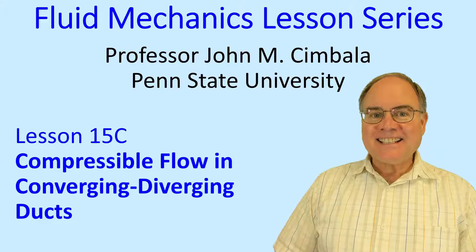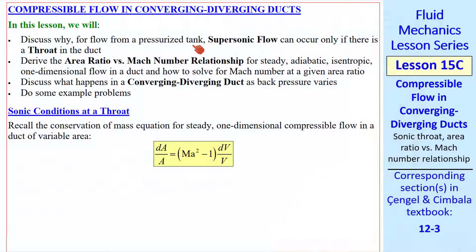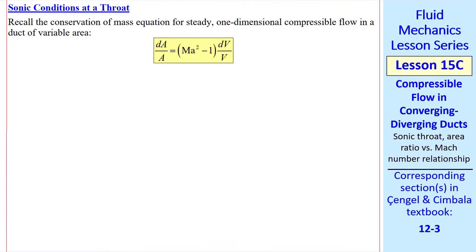Welcome to lesson 15C, Compressible Flow in Converging-Diverging Ducts. In this lesson we'll discuss why, for flow from a pressurized tank, supersonic flow can occur only if there is a throat in the duct. I'll derive the area ratio versus Mach number relationship, discuss what happens in a converging-diverging duct when we vary the back pressure, and I'll do some example problems. Recall the conservation of mass equation from a previous lesson.